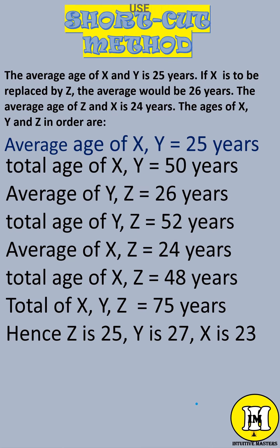Average of X and Y is 25, so total age of X and Y equals 50 years. Average of Y and Z equals 26 years, so total age of Y and Z equals 52 years. Average of X and Z equals 24 years, so total age of X and Z equals 48 years.